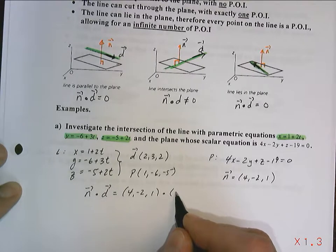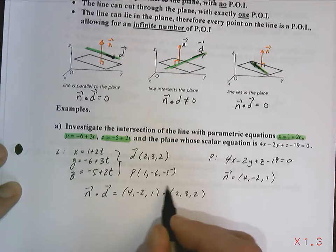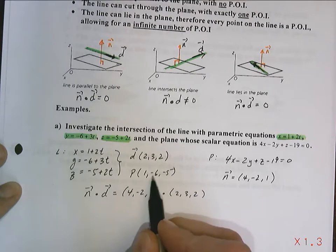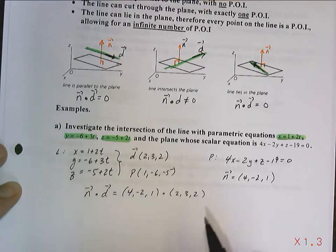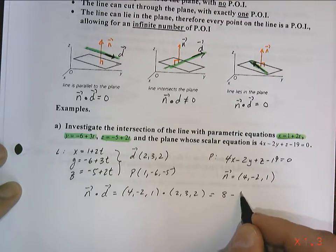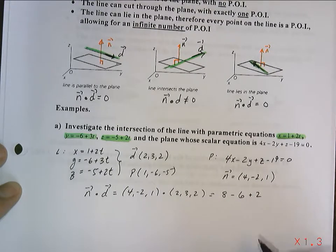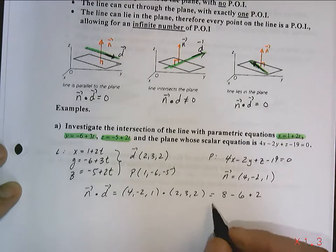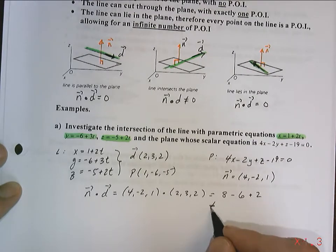2, 3, 2. Now be careful, don't be doing the dot product with a point. Make sure you're doing it with the direction vector. This is going to be 8, negative 6, plus 2. And so that is not equal to 0.